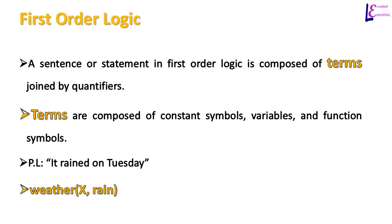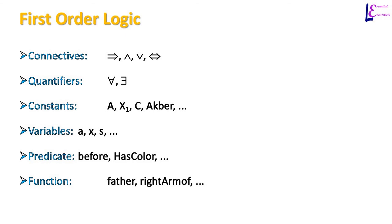Propositional logic statement it rained on Tuesday can be written with the help of predicate weather and we can replace day of the week with variable x. So we can write it as weather of x. These are some of the connectors, quantifiers, constants, variables and predicates and functions you can use in first order and higher order logic.